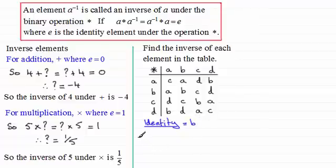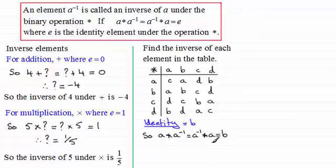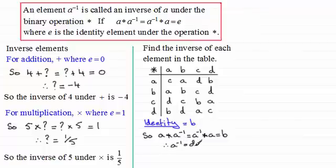Now that we've got the identity, we can find the inverse of A. A combined with its inverse should equal its inverse combined with A, and it's got to equal the identity element B. Looking in the table, what do you have to combine A with to get B? It's got to be D. A combined with D gives B, and D combined with A gives B. So the inverse of A is the element D.